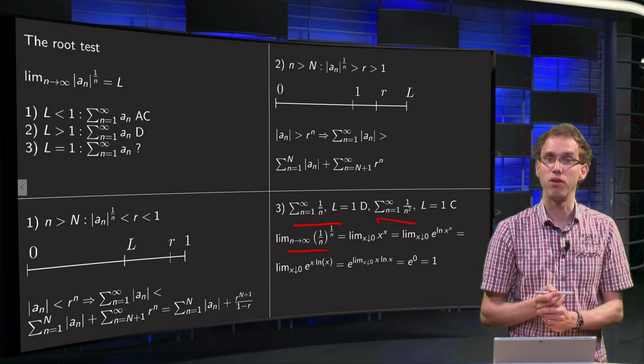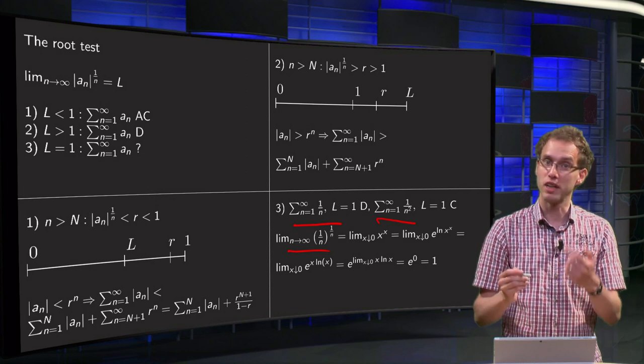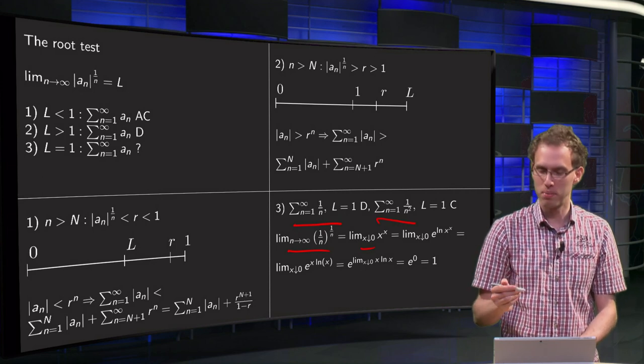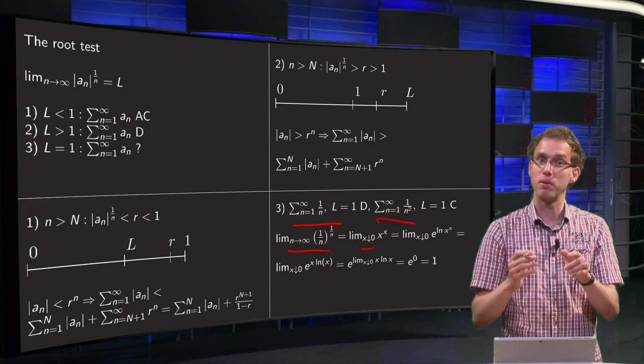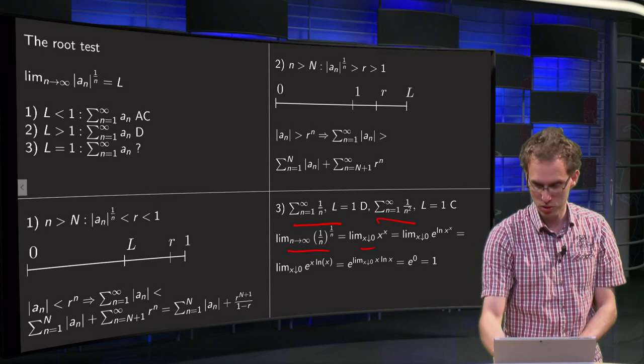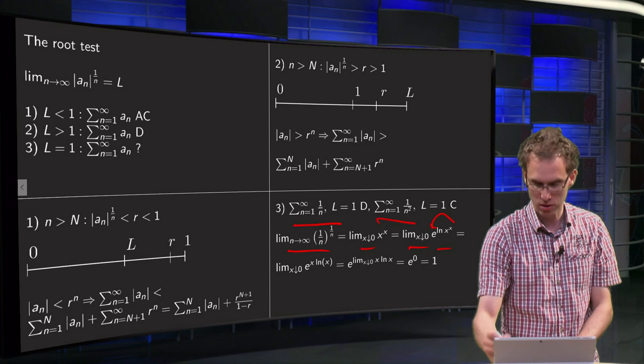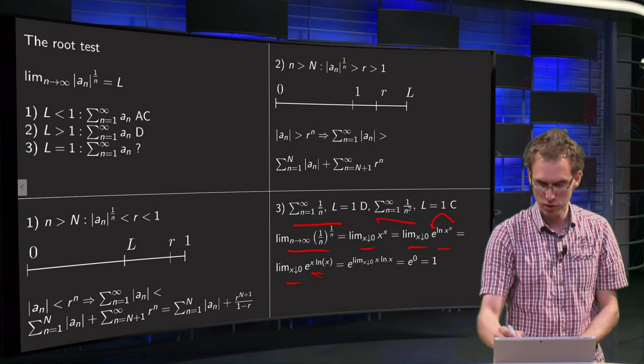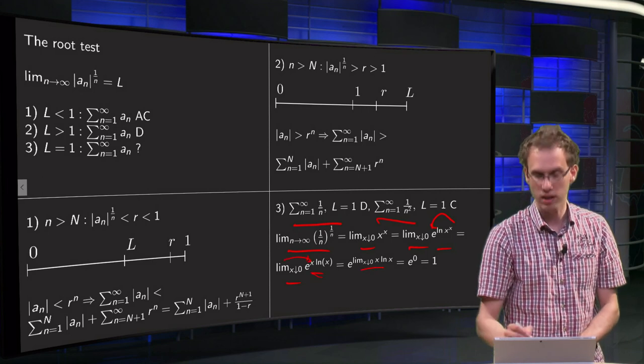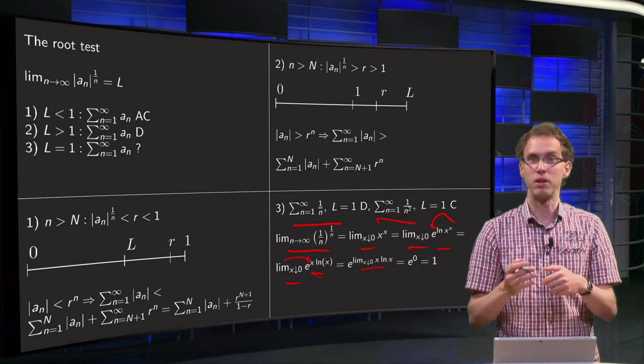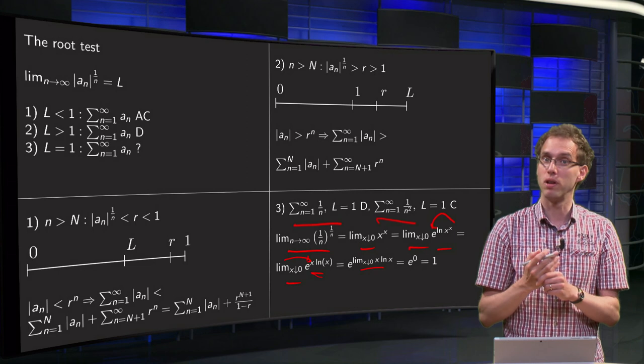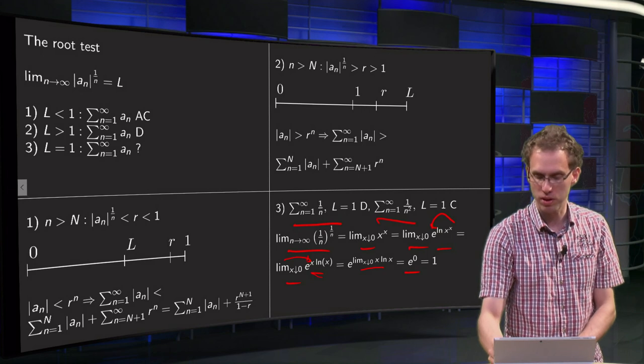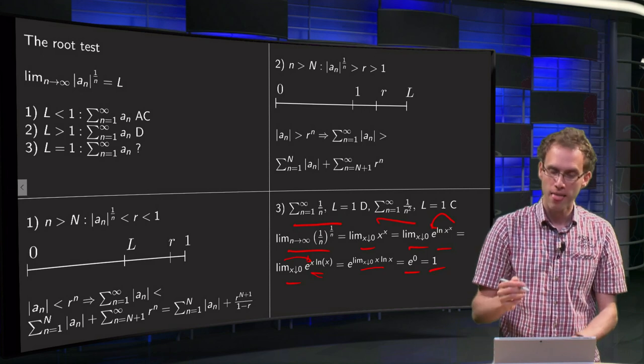Then we take limit n to infinity of 1 over n to the power 1 over n. Substitute x equals 1 over n, then we have x to 0 from x to the power x. It's a bit awkward limit, but we can compute it by taking e to the power ln x to the power x and then x to 0, because the nice part is that the x goes in front, so we have x to 0 of e to the power x ln x. It's a continuous function, so you can take the limit inside, so you get the limit x to 0 of x ln x, and you can do this either by changing it and doing L'Hôpital, or you know this one because it's a standard limit. It equals 0, so you get e to the power 0 equals 1.